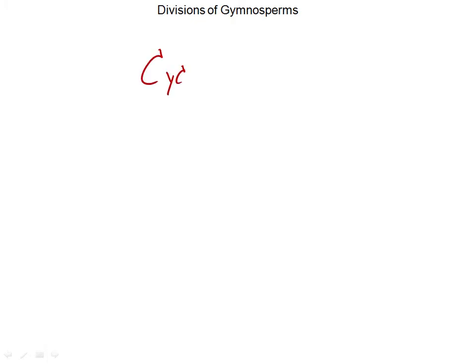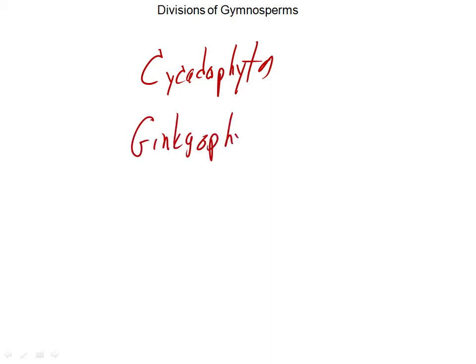The first one, the Cycadophyta, is a monophyletic group. The Ginkophyta is monophyletic — in fact, Ginkophyta has only a single extant species now. The Coniferophyta are the ones you know best — the cone-bearing plants like the pines.